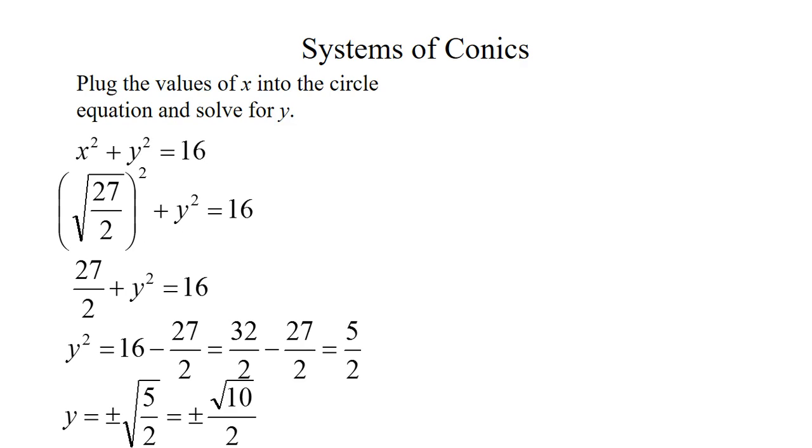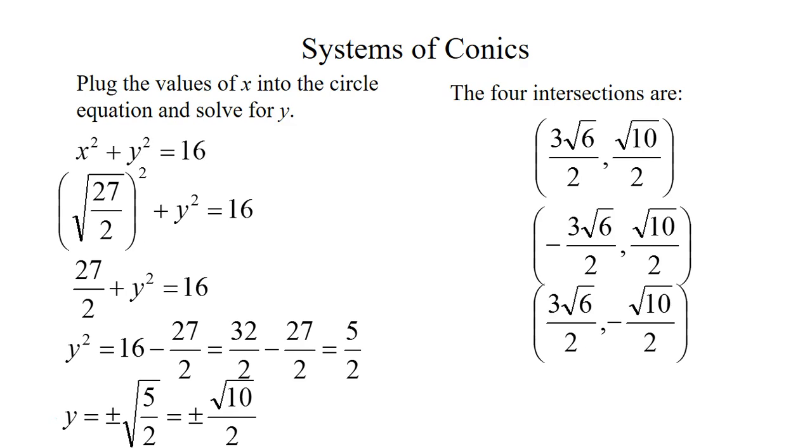And when we square root it, we get 2 more solutions: 2 solutions for y, 2 solutions for x, which gives us the 4 points where the circle and the ellipse intersect. So in simplified form, we have 3√6 / 2 and √10 / 2. And then you have the positives and negatives that you can put in. So you get the 4 different solutions in the 4 different quadrants.